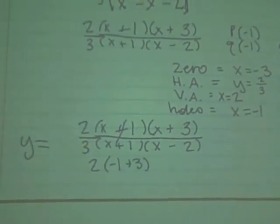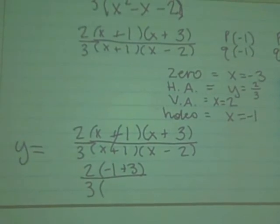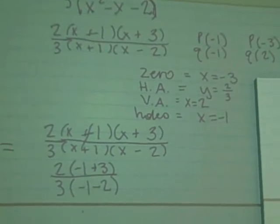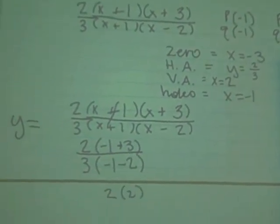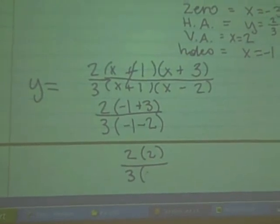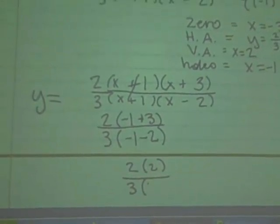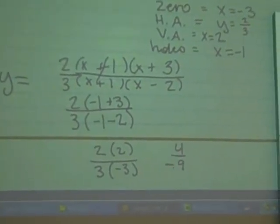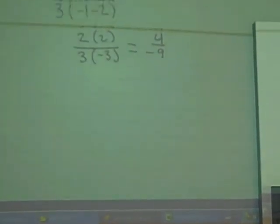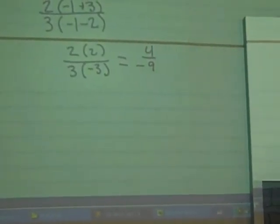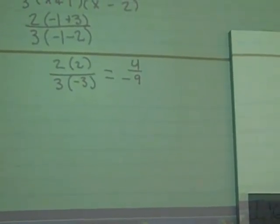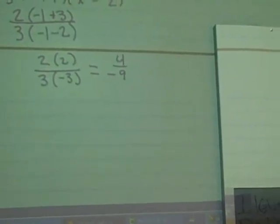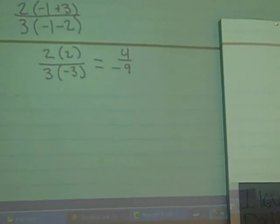Two times negative one plus three over three times negative one minus two. The point that's missing from this graph is the point negative one, negative four-ninths. That's the point that's missing, that's the hole. Negative four-ninths. That's the hole.